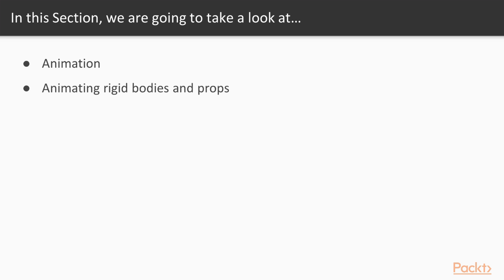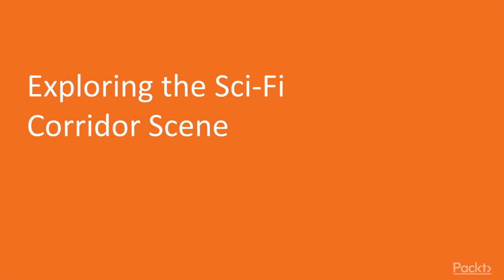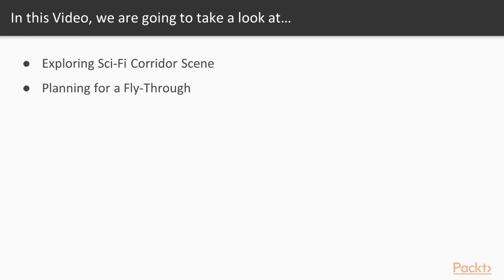In this section we're going to enter the world of animation, and in particular we're going to be looking at how we can animate rigid bodies and props. In this video we're going to be exploring a sci-fi corridor scene that is included with the Unity asset packages. We can download that asset package from the asset store, and we're going to take a look through that scene and get started planning it for a camera fly-through — animating a character that flies around that scene.